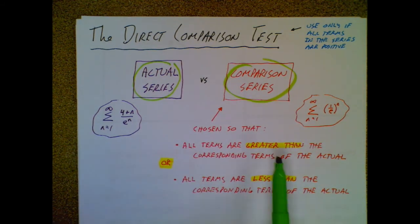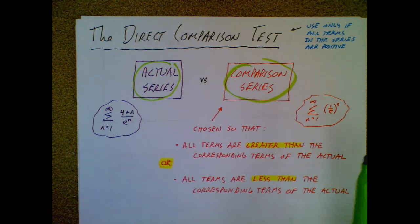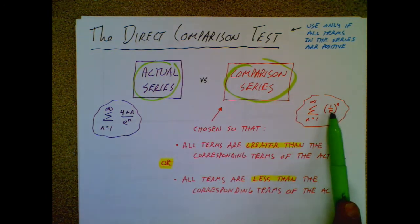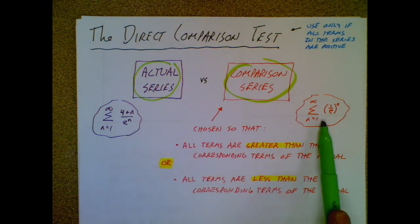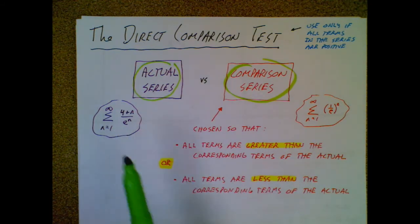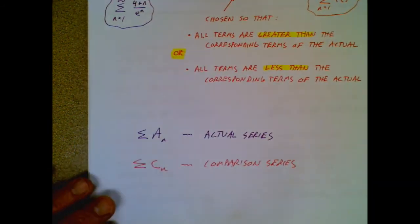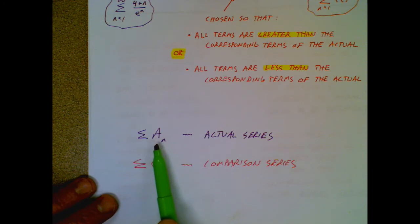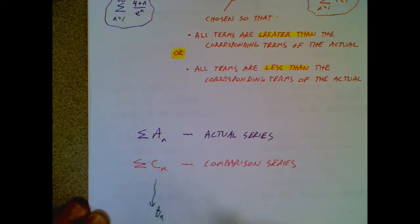What I mean by that: if you wanted all the terms of the comparison series to be less than the actual series, that means plugging in n equals 3 for the comparison should give a value less than n equals 3 for the actual — the same thing for n equals 4, 5, 6, 7. As we go through this, I'll use some notation. The actual series I'm going to call a sub n, and the comparison series I'm going to call c sub n. A lot of textbooks use b sub n and a sub n, but c sub n should help you remember it's the comparison series.